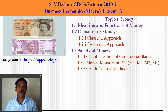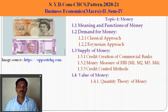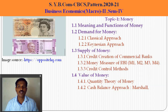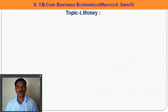Quantitative tools and qualitative tools of credit control. And lastly, 1.4 is the value of money — two approaches: the quantity theory of money by Fisher, and the cash balance approach by Marshall, Pigou, and Robertson, known as the Cambridge approach.